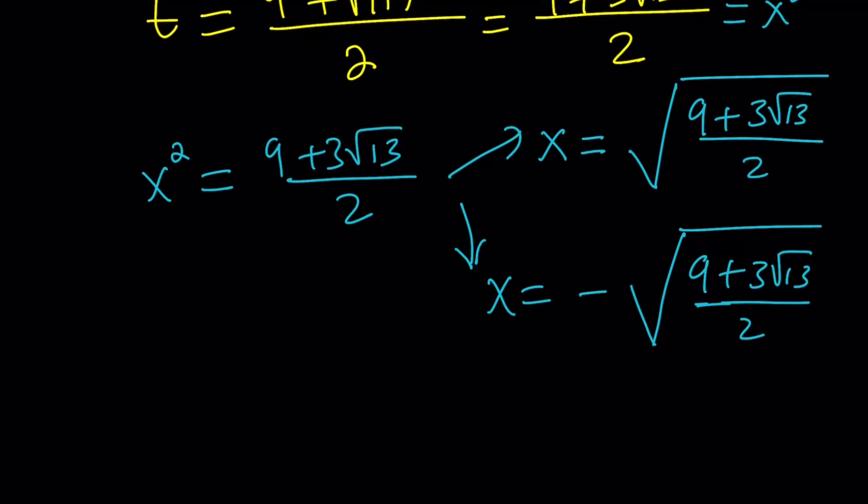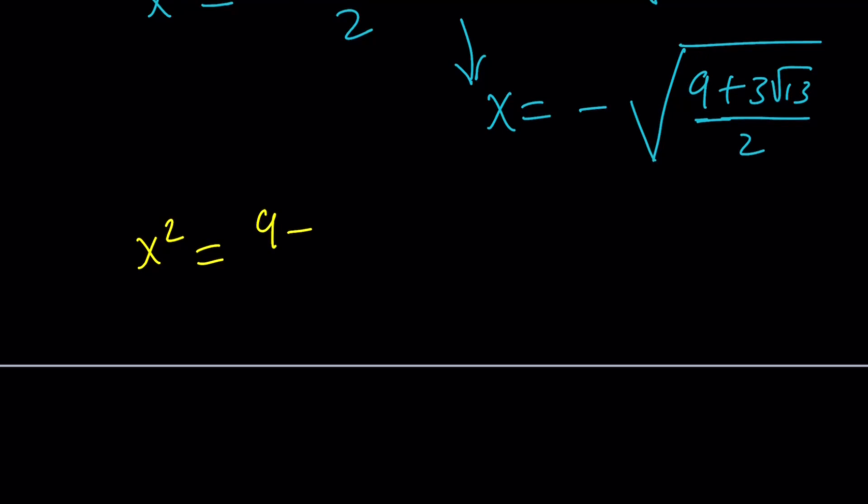Let's take a look at the second scenario. So, look at the minus sign. x squared equals 9 minus 3 root 13 over 2. Now, if you square 9, you get 81. If you square 3 root 13, you get 117. So, this is the square root of 81. This is the square root of 117. So, obviously, this is a negative number.